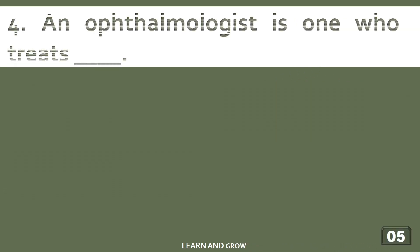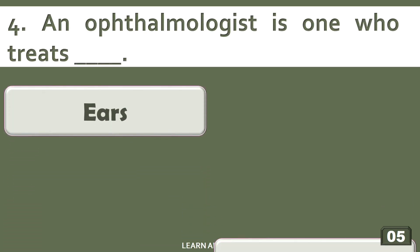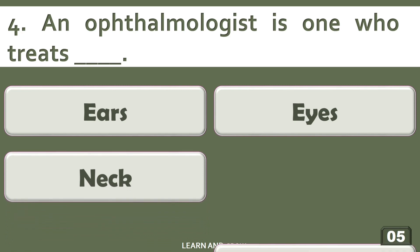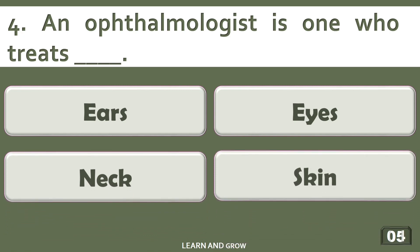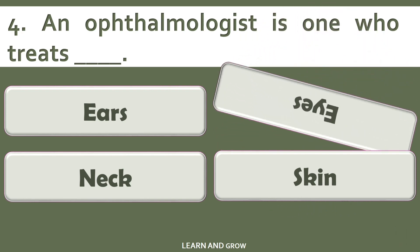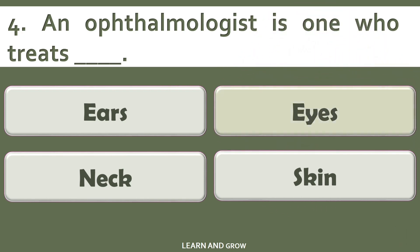An ophthalmologist is one who treats — options are: A) ears, B) eyes, C) neck, or D) skin. The right answer is eyes.